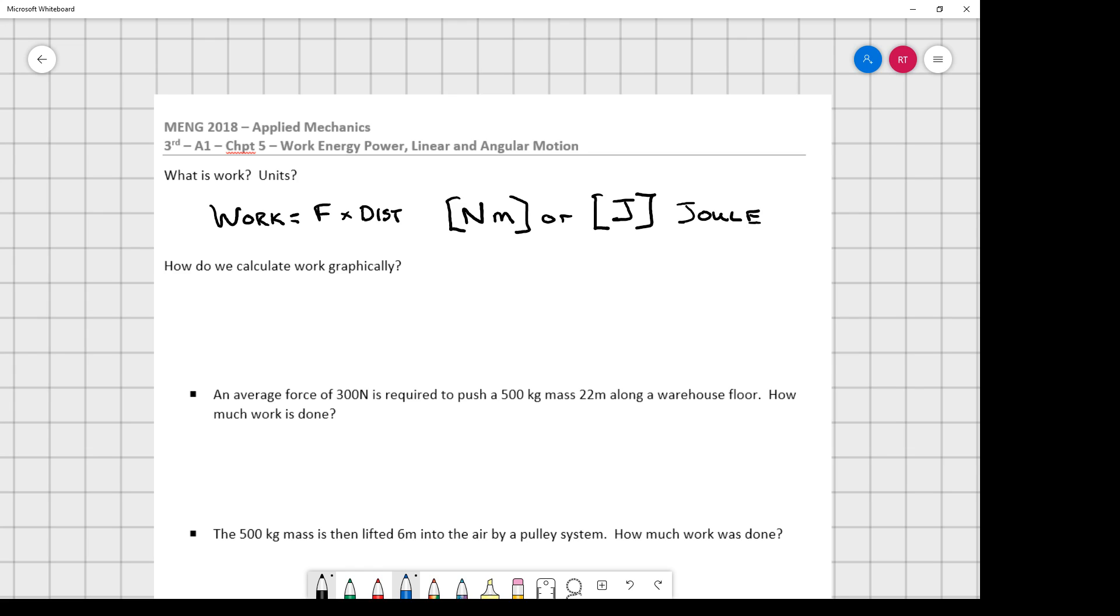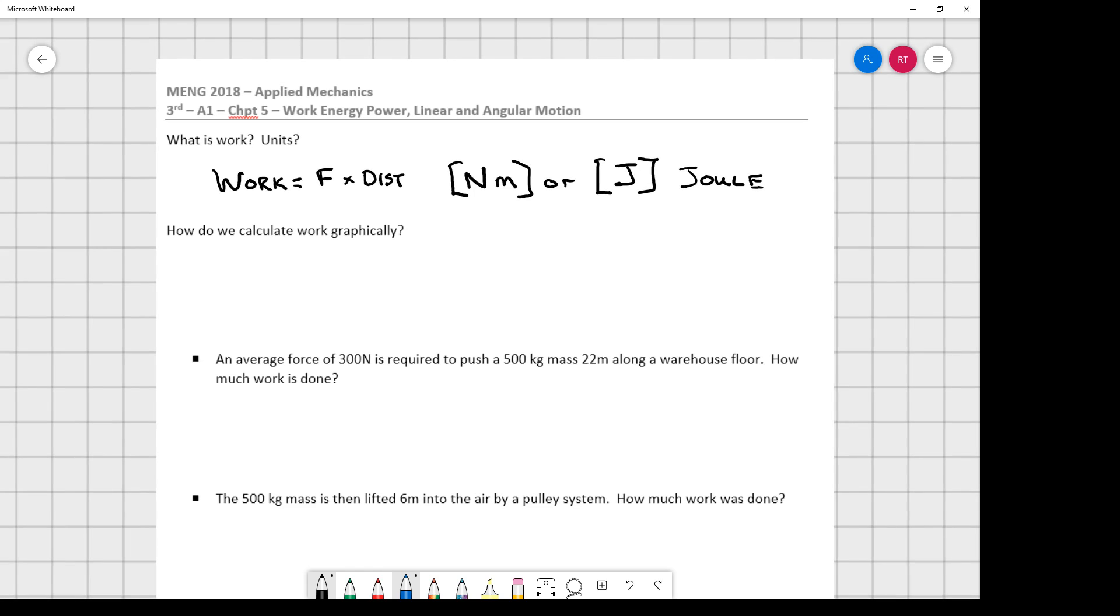And when we talked about springs earlier this year, we kind of created a graph with a force times a distance. We did the same thing when we looked at strength of materials, and we talked about toughness and other things. So if we were to look at how would we plot work graphically, generally what we're going to do is we're going to plot our force times our distance. And for instance, if we had 100 newtons of force, and maybe it went for 2 meters of distance.